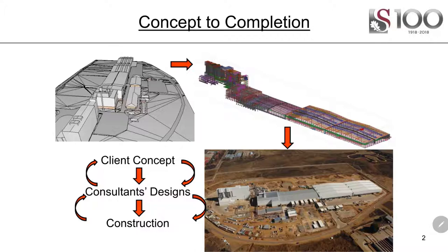When it comes to designing a building, your client doesn't care about bending moment diagrams, effective length, class four sections, or anything else you've probably learned in our course so far. What they want is a building — an office block, a factory, a production facility — whatever it is for their business or home. So we need to figure out how we take a client's concept through consultant designs to construction, converting a real structure into analyses that give us bending moments, axial forces, and other items needed for design.